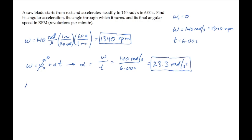We can solve for the angle it rotates through, delta theta, using this kinematic equation. Substitute the values and calculate to see that the blade rotates 419 radians while accelerating from rest to 140 radians per second in 6 seconds.